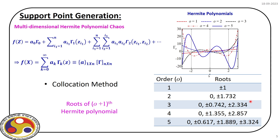Using Hermite polynomials, the multi-dimensional representation of the limit state can be expressed in symbolic form. For the evaluation of these coefficients, we use collocation techniques. Support points are constructed using the roots of one-order-higher polynomials. You can see the different Hermite polynomials of different orders, and we can identify their roots — these are fixed points. Using these roots we find the support points, and at these collocation points we solve the original limit state function to obtain the unknown coefficients.